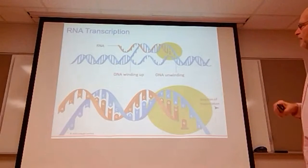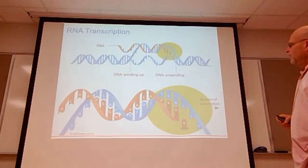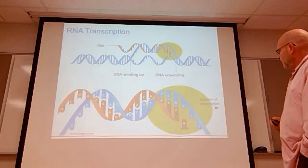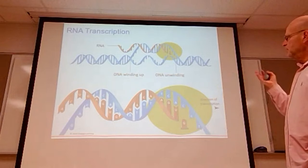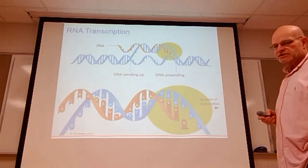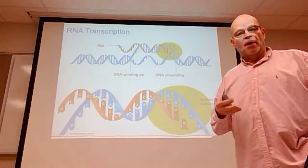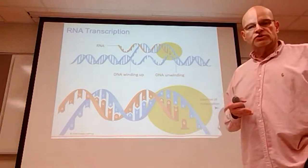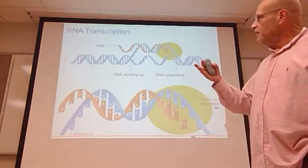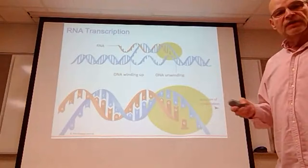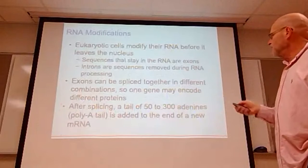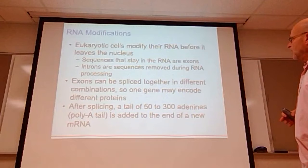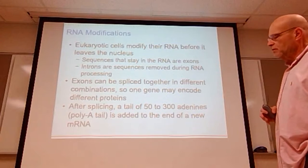The DNA unwinds and the RNA is being formed. Transcription continues until it gets to something called a stop codon. At that point RNA transcription ceases, the transcript is released, it leaves the nucleus of the cell, and goes to the ribosome.